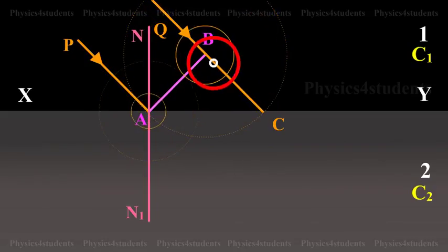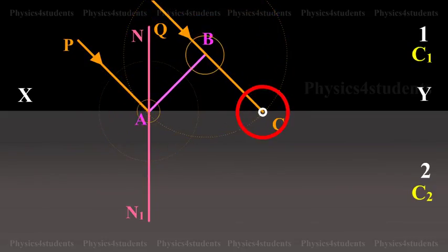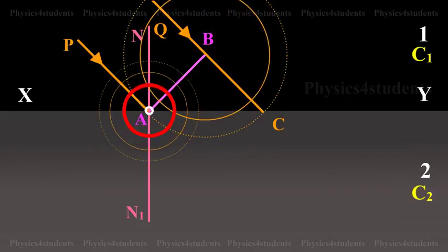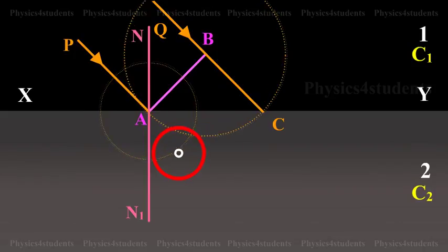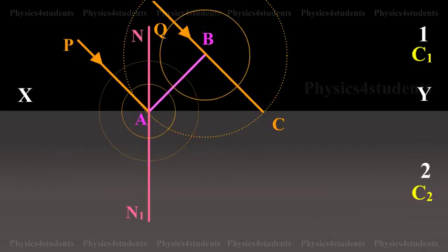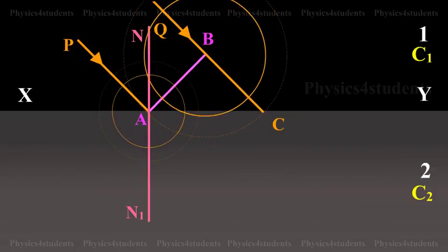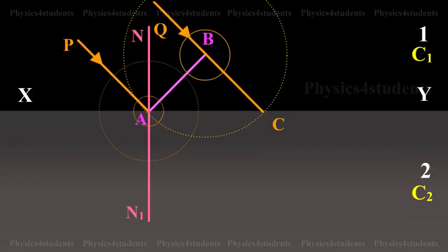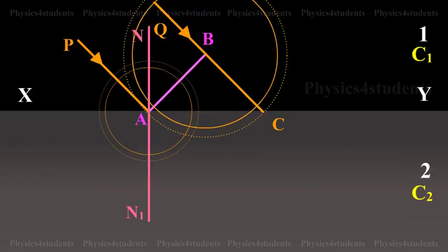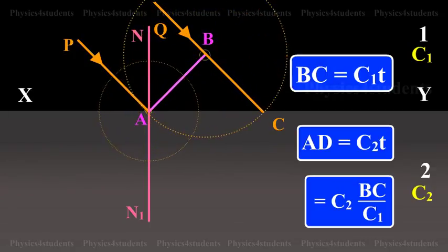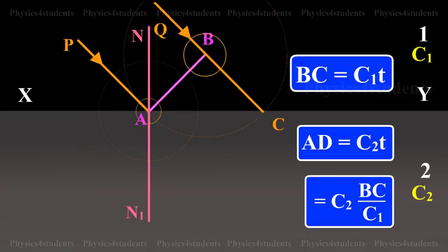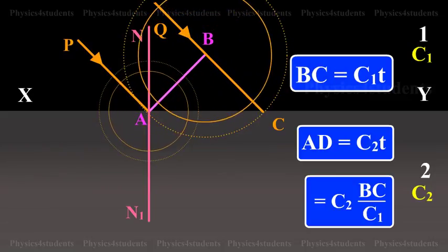By the time the secondary wavelets from B reach C, the secondary wavelets from point A would travel a distance AD equals c2t, where t is the time taken by wavelets to travel the distance BC. Therefore, BC equals c1t and AD equals c2t equals c2 into BC by c1.